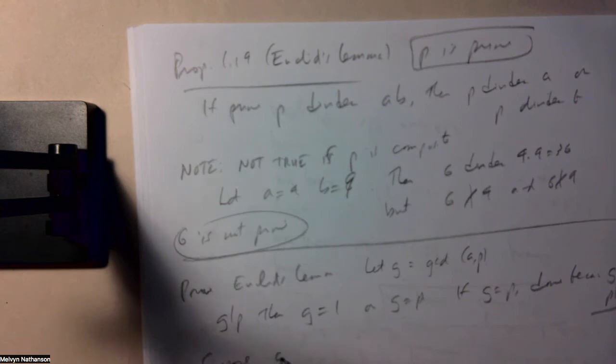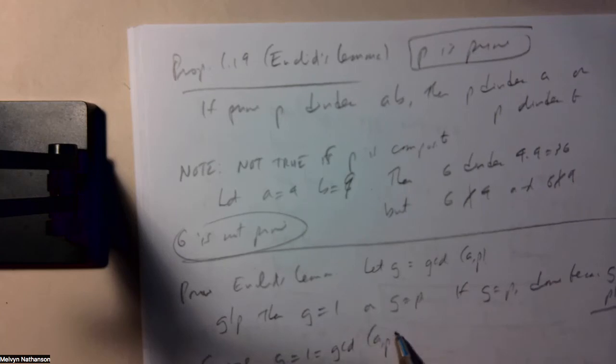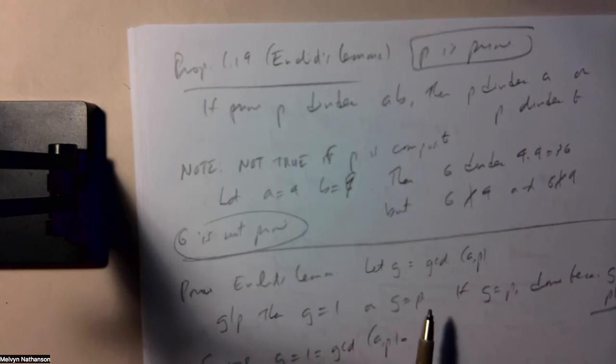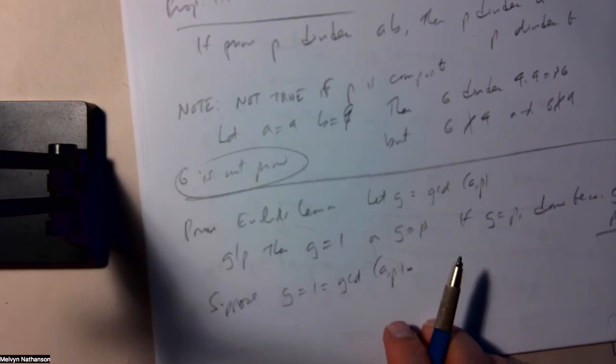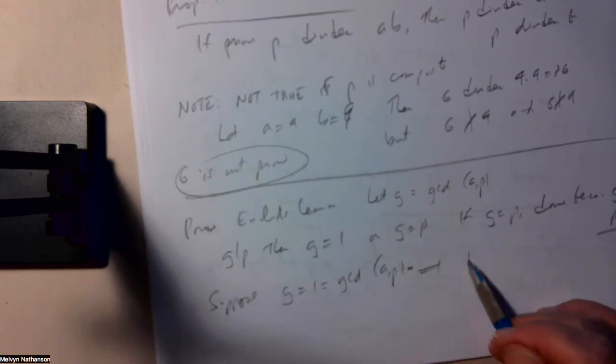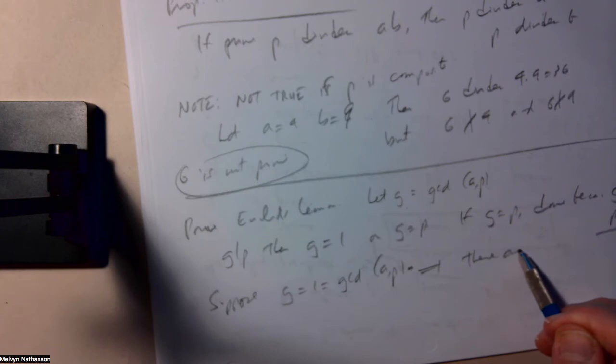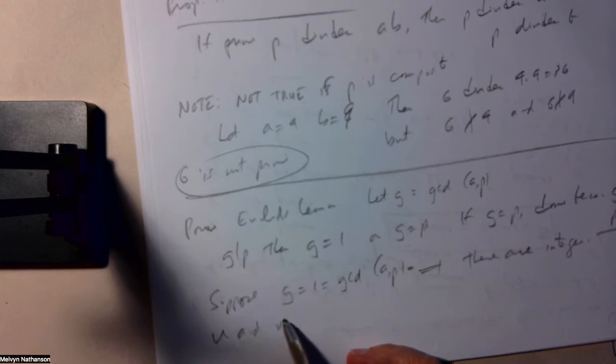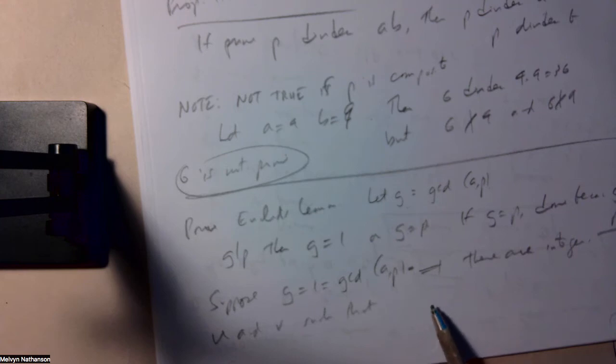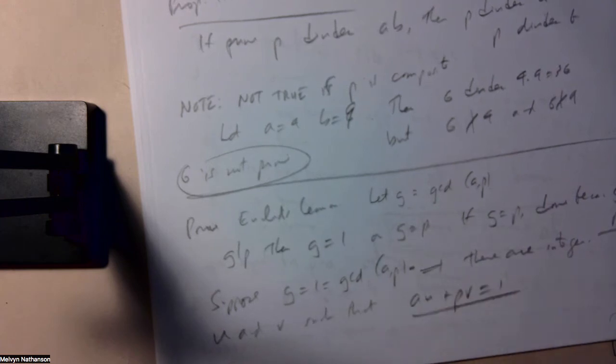So suppose that g is 1, that is, the greatest common divisor of a and p is 1. By the Euclidean algorithm, there are integers u and v such that we can write the greatest common divisor of two numbers as an integral linear combination of them. So a u plus p v equals 1.